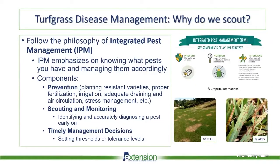So why do we scout? This really follows the main component of integrated pest management, which emphasizes knowing what pests you have and managing them accordingly. It has three critical steps. One is prevention, where we try to prevent the buildup of pests. This can be by planting resistant varieties, maintaining proper fertilization especially nitrogen sources in turf, irrigation timing and amount, maintaining adequate air drainage and air circulation, and general stress management to keep turfgrass as healthy as possible to reduce its risk for disease development.